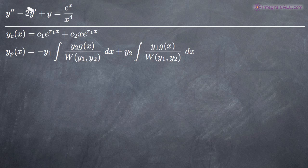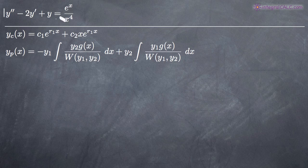One important thing to note: if we're going to use the formula for the particular solution, it's really important that we have a coefficient of one in front of our second derivative of y term. If you don't have a coefficient of one, just divide that coefficient through both sides to make it one — do that before you get started, because the formula won't work otherwise. We do have a coefficient of one here, so we'll go ahead and get started with our complementary solution.